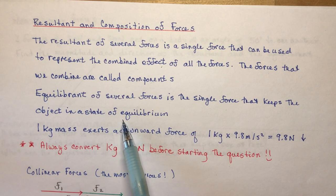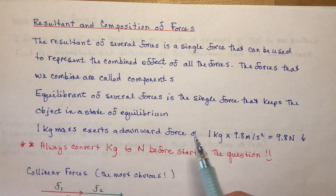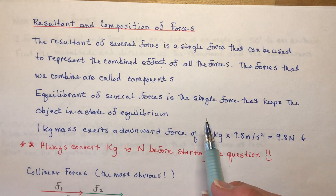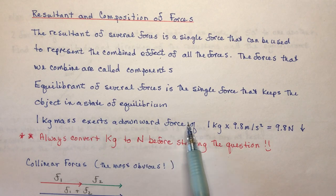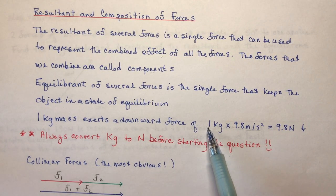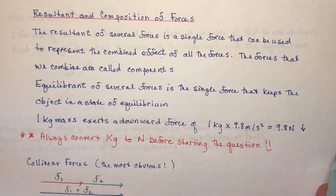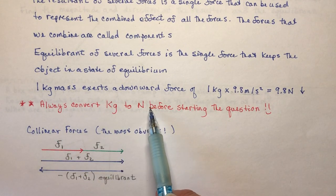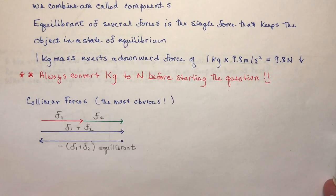The equilibrant is the single force that keeps the object in a state of equilibrium. If two teams pull equally on a cord, nobody moves — that's equilibrium. Same applies to a box on a ramp: if it isn't moving, forces must balance. Remember: a kilogram mass exerts a downward force of 9.8 newtons (1 kg × 9.8 m/s²). Always convert kilograms to newtons before starting a question.